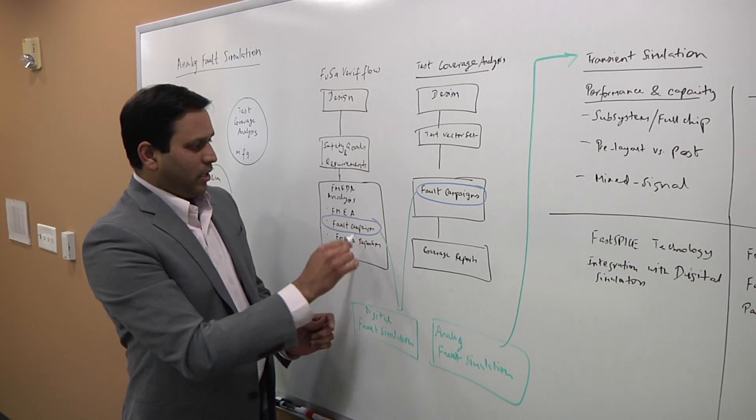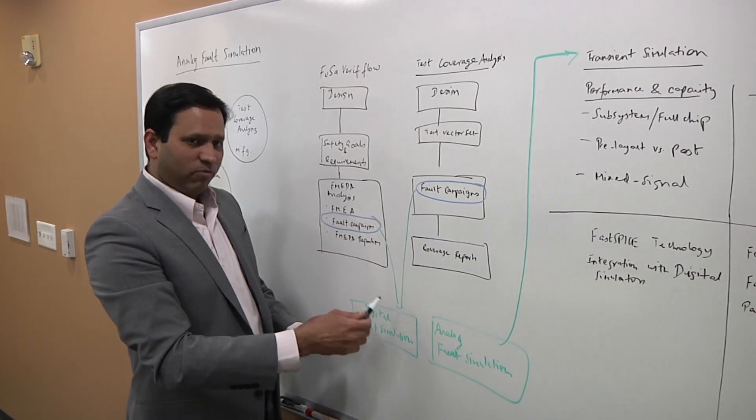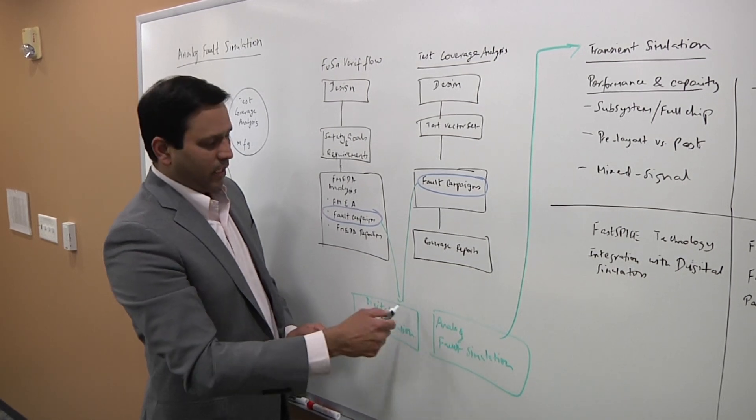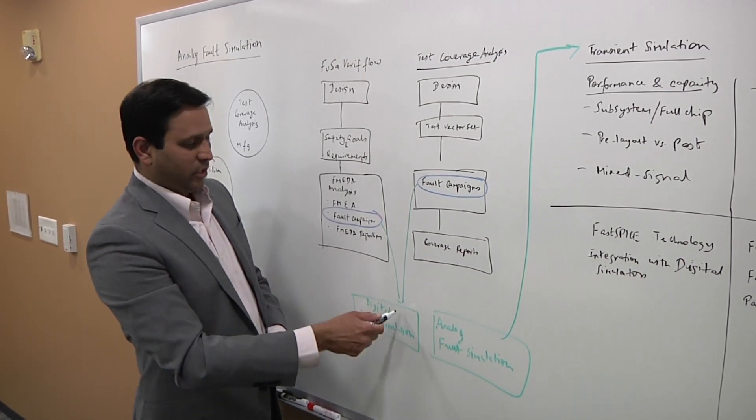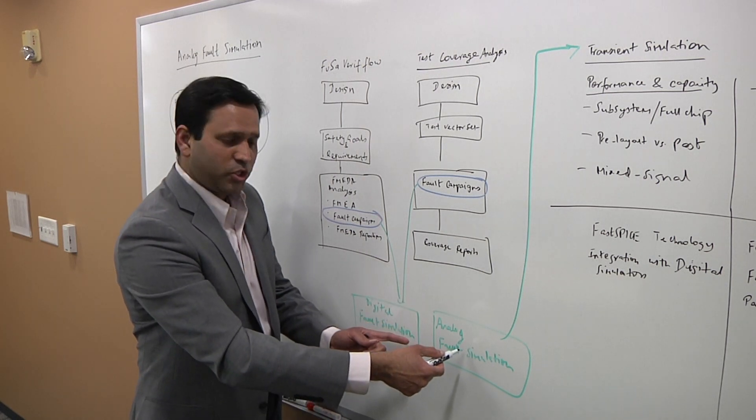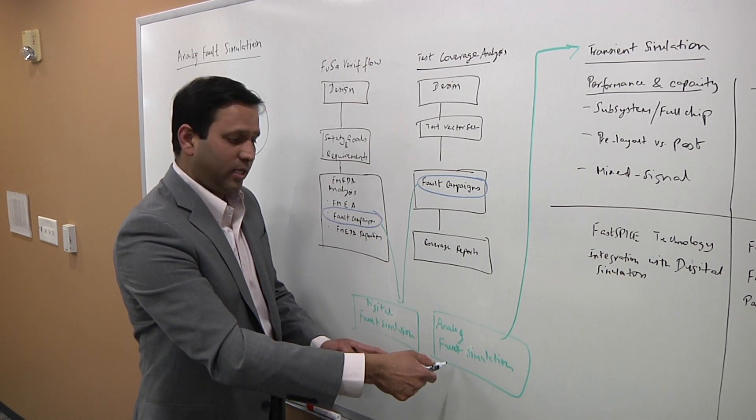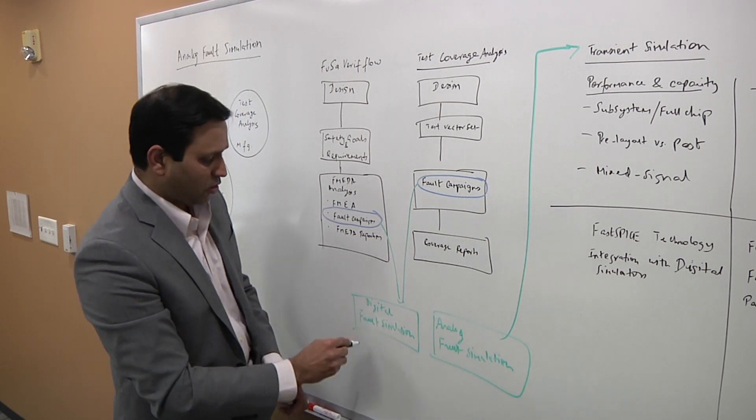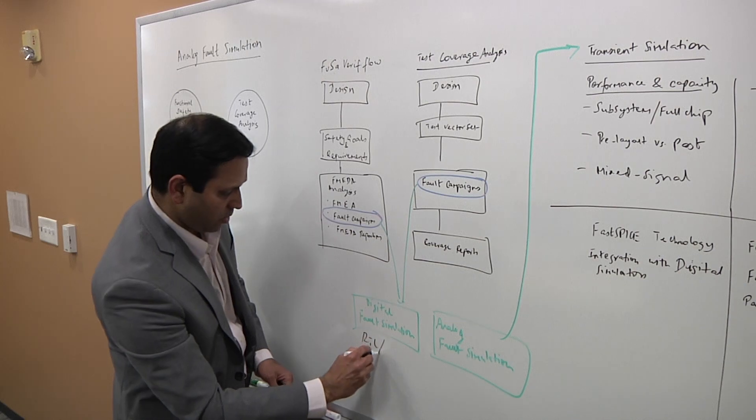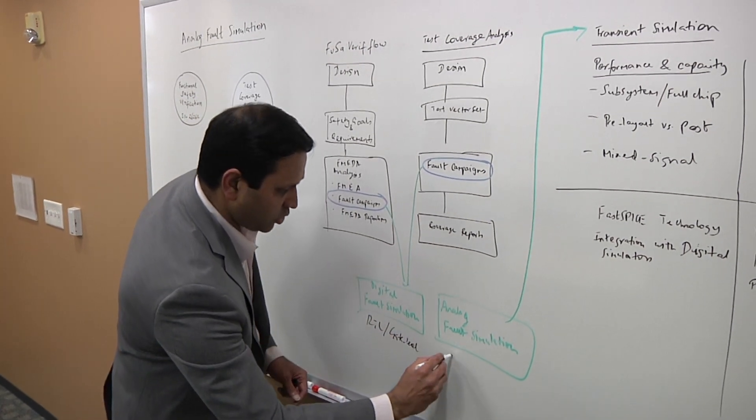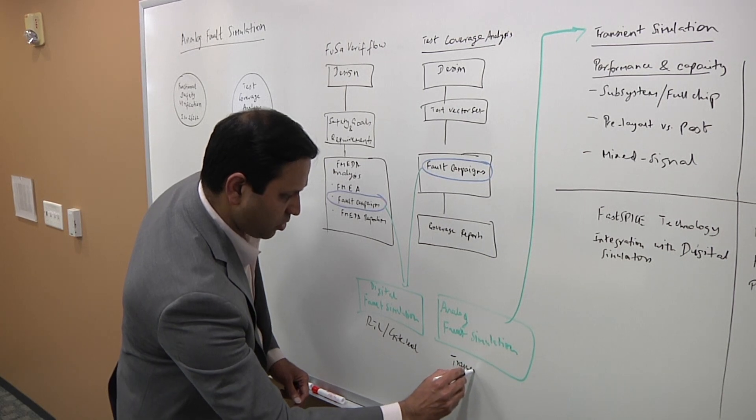Now, to your question, fault campaigns here can be performed using digital fault simulation or analog fault simulation. The digital fault simulation here is what has been traditionally done by companies. Now, more and more companies are switching to using analog fault simulation in addition to digital fault simulation. And the key difference there is that digital fault simulation is at the RTL, or gate level. Analog fault simulation is at the transistor level.